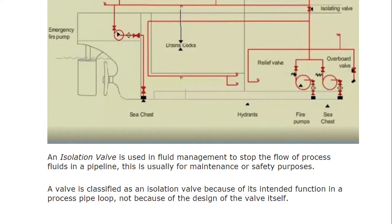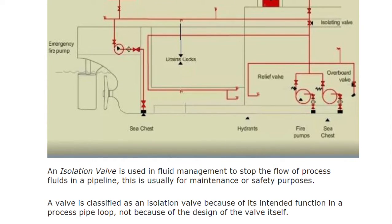An isolation valve is used in fluid management to stop the flow of process fluid in a pipeline. Isolation means it is going to isolate — separate — the two lines. This is usually for maintenance or safety purposes, so there can be two reasons: maintenance or safety. A valve is classified as an isolation valve because of its intended function in a process pipe loop, not because of the design of the valve itself.